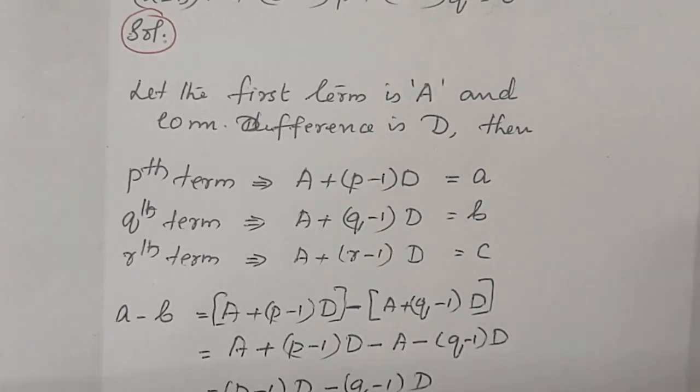We can take the first term of this AP as capital letter A and the common difference as capital letter D. Then according to the formula of finding Pth term of an AP, Pth term is equal to first term plus P minus 1 into common difference. In the question, it is given that it is small letter A. Therefore, we can write A plus P minus 1 into D equal to A. And the Qth term is A plus Q minus 1 into D equal to B. And the Rth term is A plus R minus 1 into D equal to C.